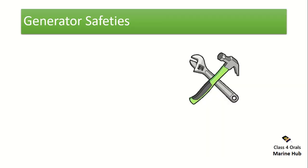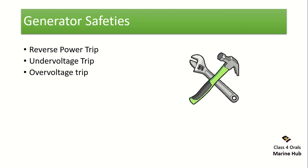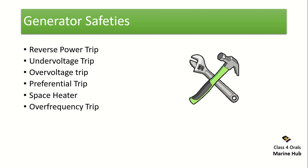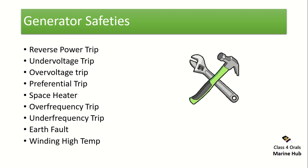First, we'll list out the generator safeties. The first generator safety is reverse power trip, under voltage trip, over voltage trip, preferential trip, space heater, over frequency trip, under frequency trip, earth fault, winding high temperature fault, and the differential relay.